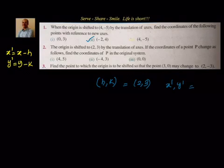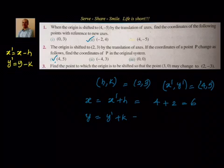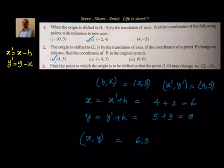Given x-dash, y-dash equal to (4, 5) and h, k we have to find x, y. So x equals x-dash plus h, that is 4 plus 2 which equals 6. Similarly, y equals y-dash plus k, that is 5 plus 3 which equals 8. So x, y is (6, 8). The original coordinates are (6, 8), but when the origin is shifted to (2, 3) they became (4, 5).